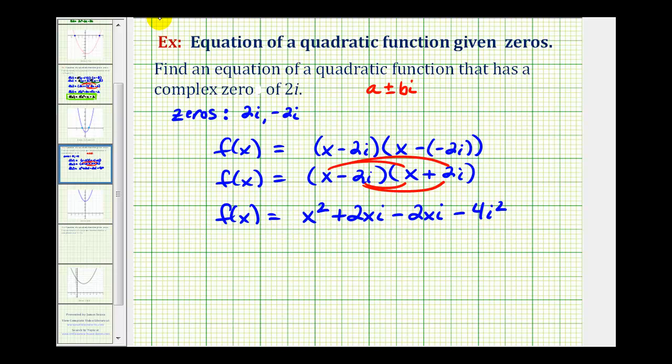Now we'll simplify. Notice the two middle terms are opposites, which simplify to zero. We also need to remember that i² equals negative 1. Now we'll substitute negative 1 for i², and simplify again. We'll have -4 times negative 1. So one possible function with zeroes plus or minus 2i would be f(x) = x² + 4.